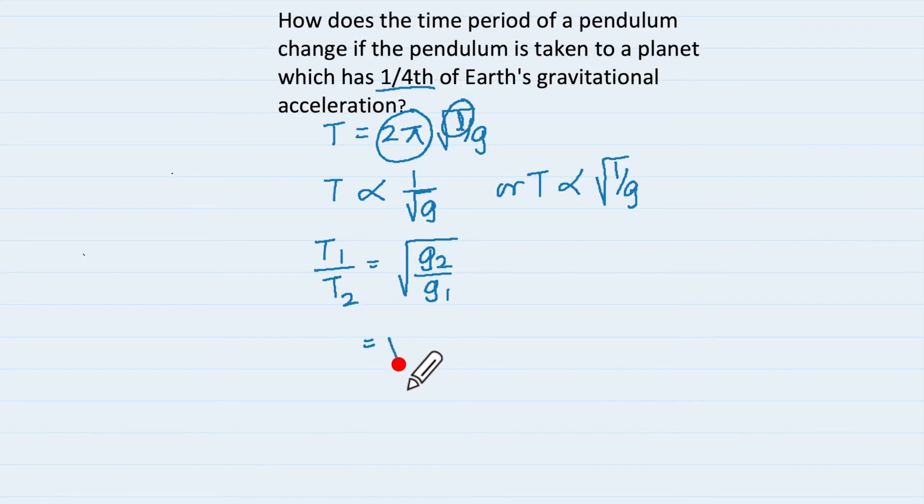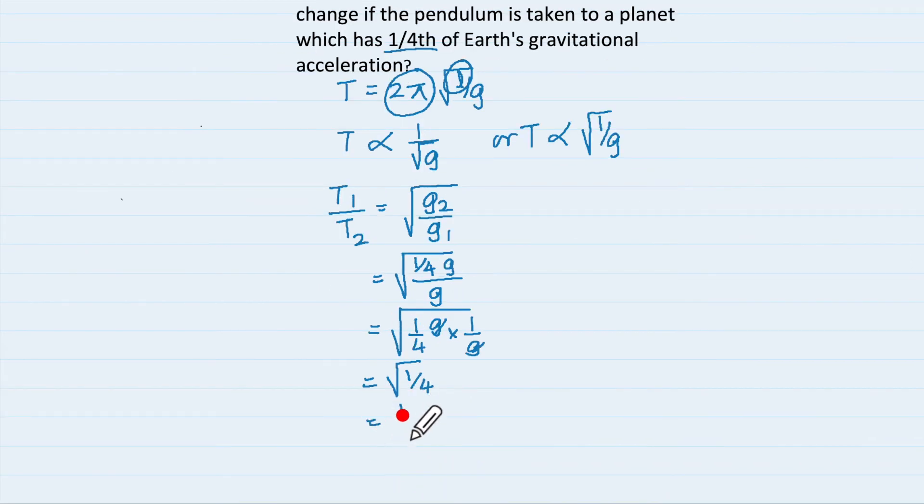So our gravity is becoming one-fourth of the Earth's gravity. This is g1 which is Earth's gravity. Therefore, it is under root one-fourth of g divided by this g. So we write like so and that becomes under root 1 upon 4 which is 1 upon 2.